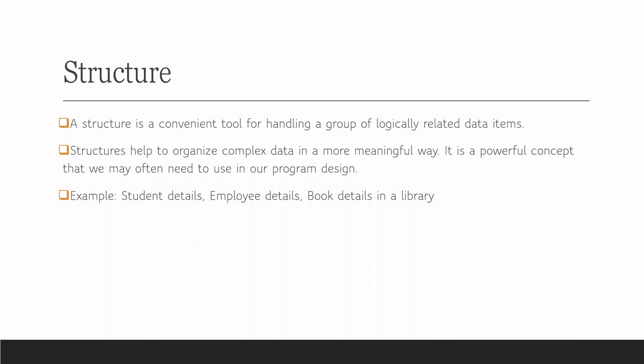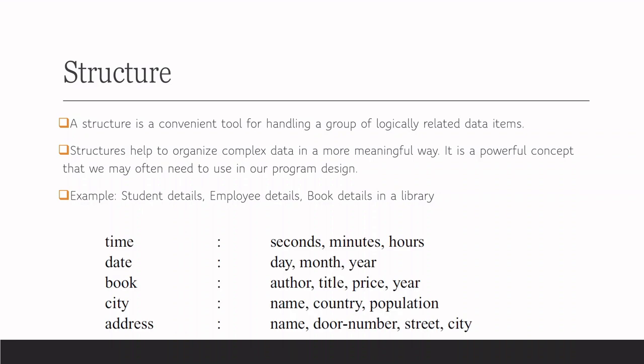But in case of a structure, if we save the details of a student, it includes different data types. For name, we need a string or character array. For roll number, we need an integer or a long integer. For marks, it cannot be integer alone, so we give it as float. So examples are given like that.